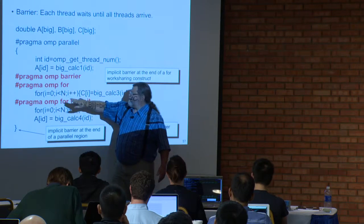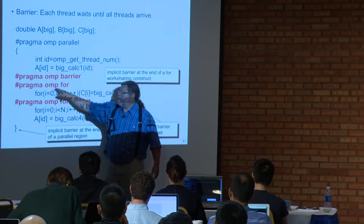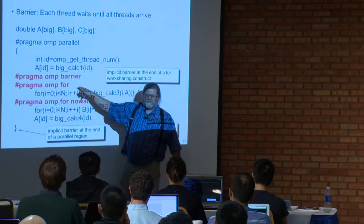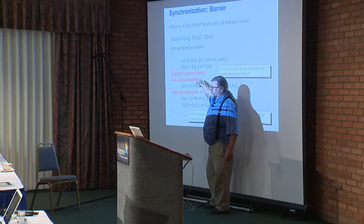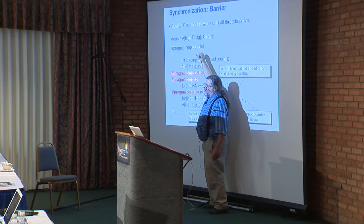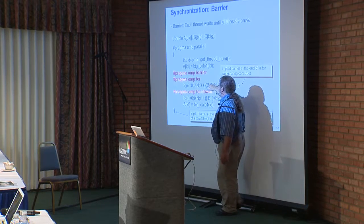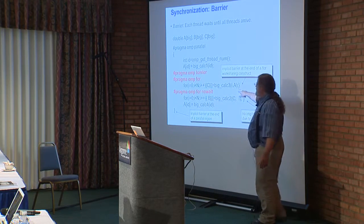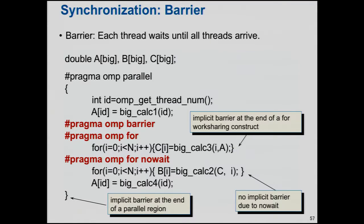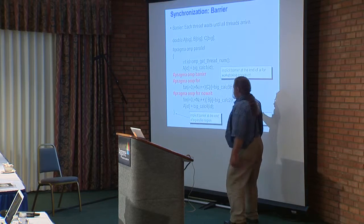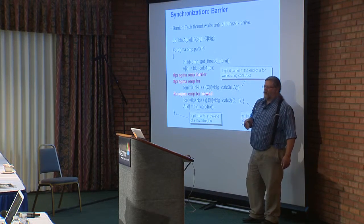I almost never write pragma OMP parallel for. You'll rarely see that in real applications I work with. I always move the pragma OMP parallel out as high up to the top as I can get it. So I'm going to compute array C with pragma OMP for, and I look ahead and realize I'm going to use it later on, so I want to make sure all threads finish before anyone goes on. But I don't need to put a barrier there myself.